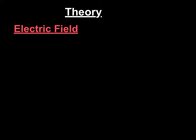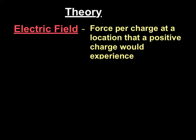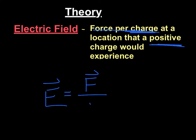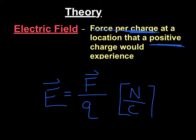We're going to start with a little bit of theory on the electric field. What is an electric field? The electric field is the force per charge at a location that a positive charge would experience. The force per charge is very important because it's a hypothetical — if you put a charge in some place, what's the force it would experience per coulomb of charge? Mathematically, you write this as your electric field equal to force per coulomb of the charge you place there. The units of the electric field are newtons per coulomb. We're going to relate this to another quantity we've talked about: voltage or electric potential.